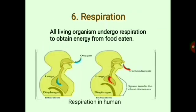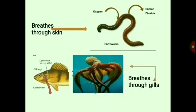Our next characteristic is respiration. All living organisms undergo respiration. Respiration refers to the exchange of gases in the environment in order to obtain energy from food eaten. Humans and most animals breathe through the lungs, but all living organisms have different organs for breathing. As seen in this picture, earthworms and leeches breathe through their skin; sea animals like fish and octopus breathe through gills; and in the case of plants, they breathe through stomata present on their leaves.